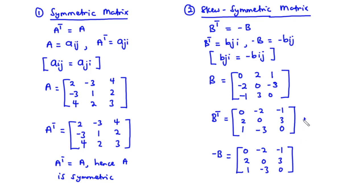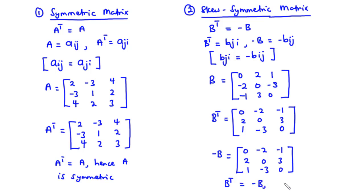Comparing the two matrices: they have the same size and their corresponding elements are equal. Row 1: 0, negative 2, negative 1 matches 0, negative 2, negative 1. Row 2: 2, 0, 3 matches 2, 0, 3. Row 3: 1, negative 3, 0 matches 1, negative 3, 0. Since the transpose of B equals the negative of B, matrix B is skew-symmetric.